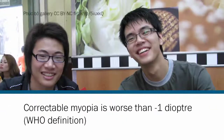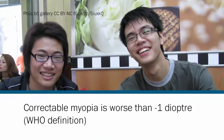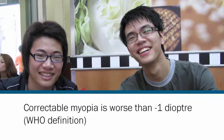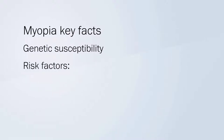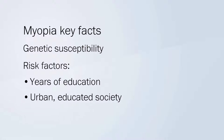Correctable myopia is defined by the World Health Organisation as worse than minus one diopter. Research has shown that there is a genetic susceptibility to myopia and also a number of risk factors. For example, short-sightedness is linked to the number of years of education and also to an urban, educated society.